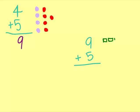1, 2, 3, 4, 5, 6, 7, 8, 9. Next, let's draw 5 squares. 1, 2, 3, 4, 5.